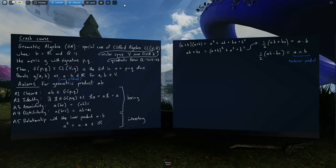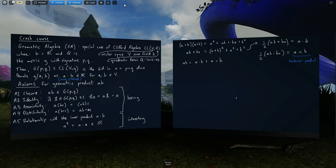So if the two equations on the right-hand side of the board are true, then I can write ab = a·b + a∧b. And we know that this is a scalar, it's in R, we say it's grade zero.